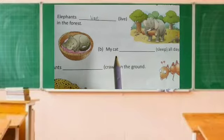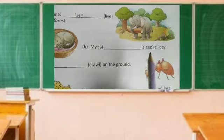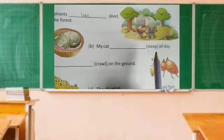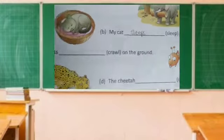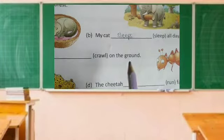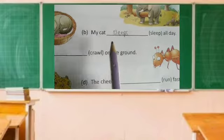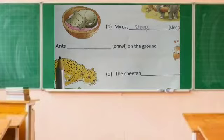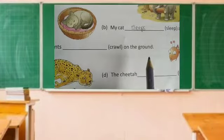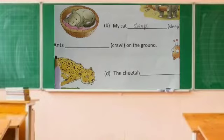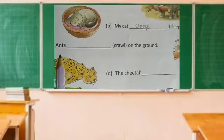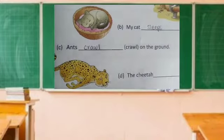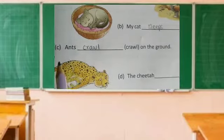(b) My cat dash sleep all day. 'Cat' is in singular form, so we add 's' to the verb — my cat sleeps all day. (c) Ants dash on the ground. 'Ants' is in plural form, so the verb will be without 's' — ants crawl on the ground.